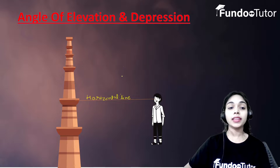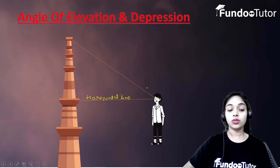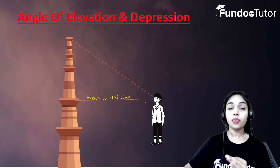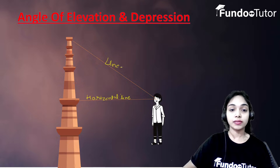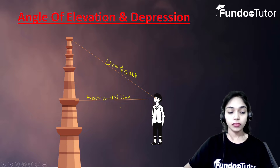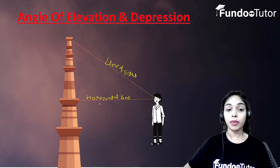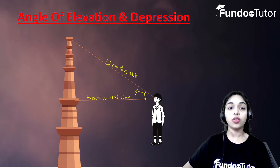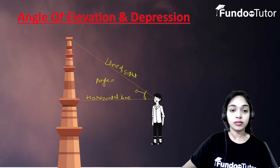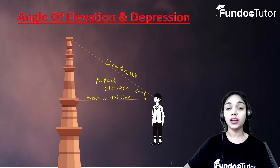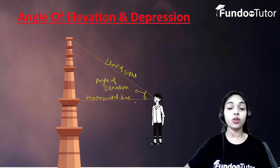Now when the person is looking at the top of this manar, the line drawn from the eye to the top of this manar is called the line of sight. We see that the line of sight makes some angle with this horizontal line, and this angle is called the angle of elevation. Simply, when the person is looking up, the angle formed between the line of sight and the horizontal line is called the angle of elevation.